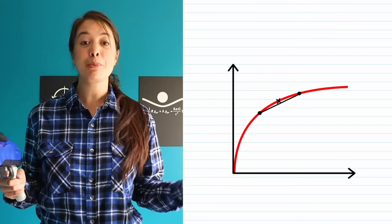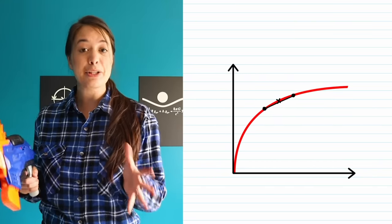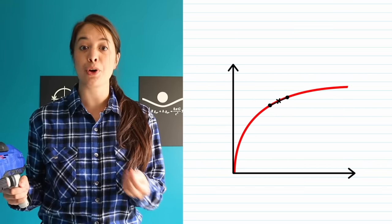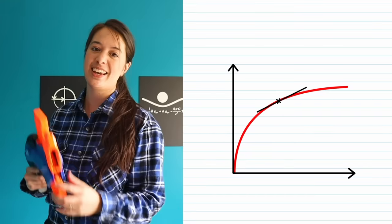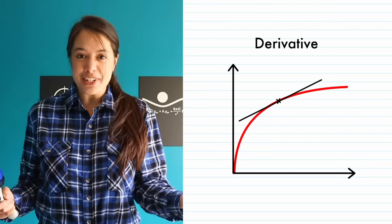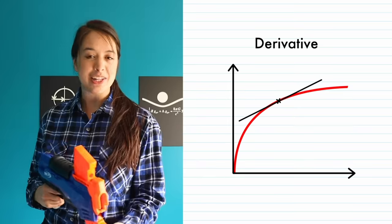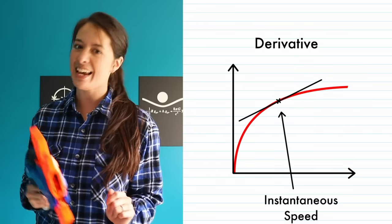As the distance between our two points approaches zero, this slope value that we're calculating approaches the tangent to the curve at a point. This is the derivative and it's what we use to calculate what we're calling instantaneous speed.